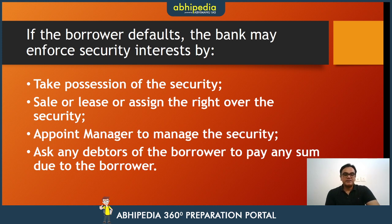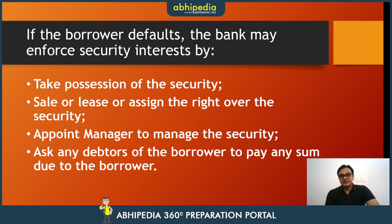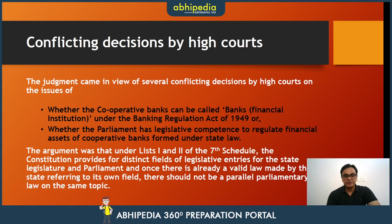If the borrower defaults, the bank may enforce security interest through the following options: first, take possession of the security — so if you have a property pledged, the bank can take possession; second, sell or lease or assign the right over the security; and third, ask any debtor of the borrower to pay any sum due to the borrower so that recovery can happen from that source. These are the basic options available.